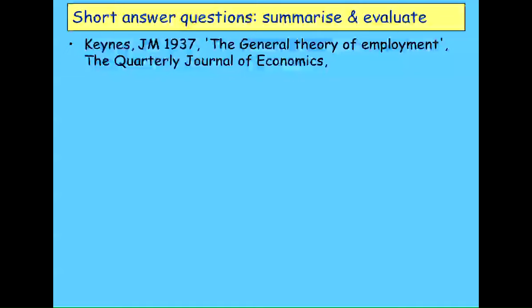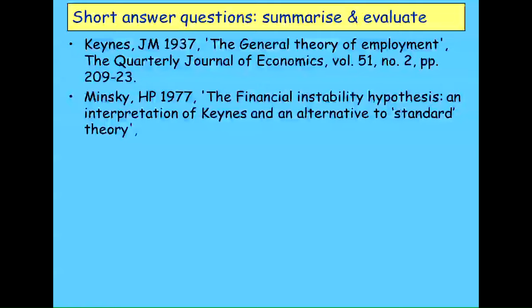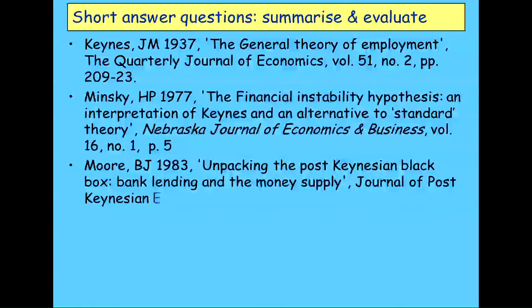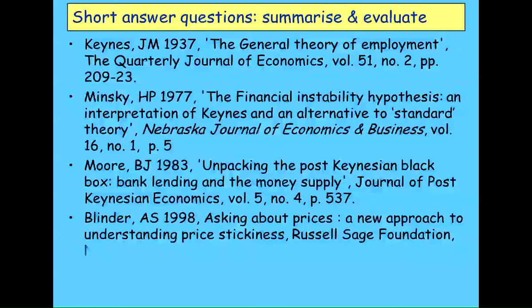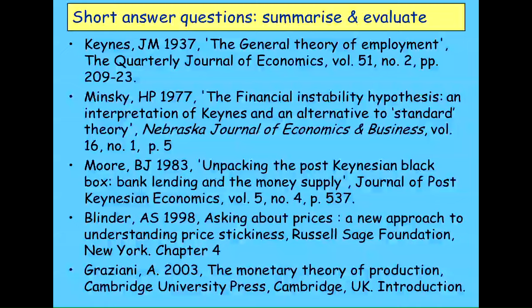The readings are: Keynes and the General Theory of Employment in 1937; Minsky with the Financial Instability Hypothesis and Interpretation of Keynes; Basil Moore's work on endogenous money, explaining the mechanisms behind endogenous money creation; Alan Blinder's empirical research into how prices are set in a capitalist economy — basically chapter four, not the rest of the book; and finally Graziani's Theory of Money, Theory of Production. They're all on the website — if one is missing, let me know.